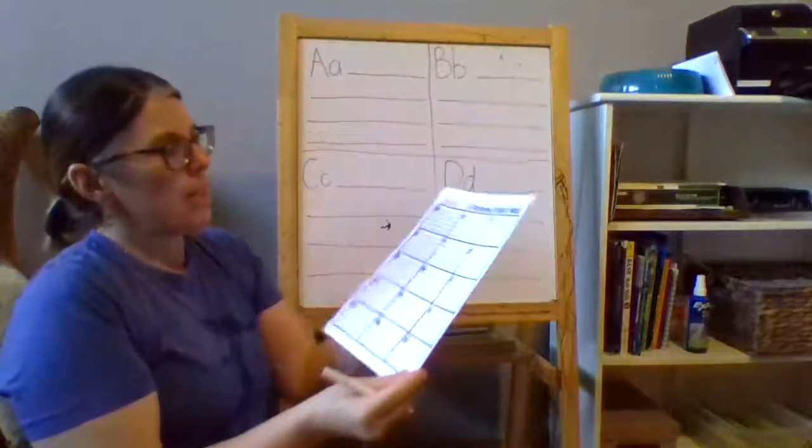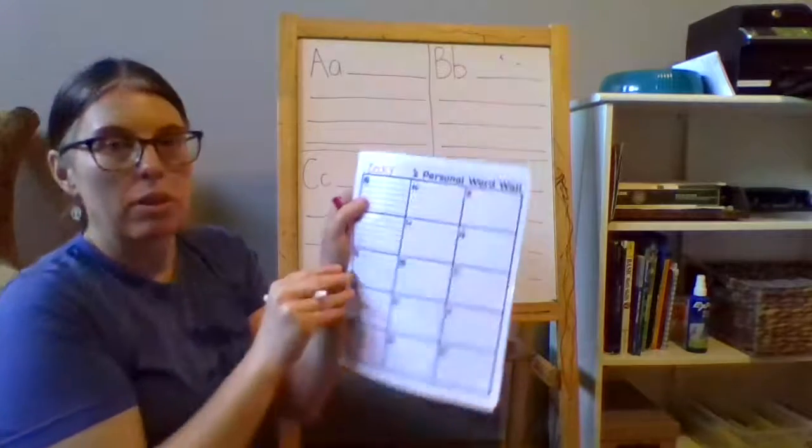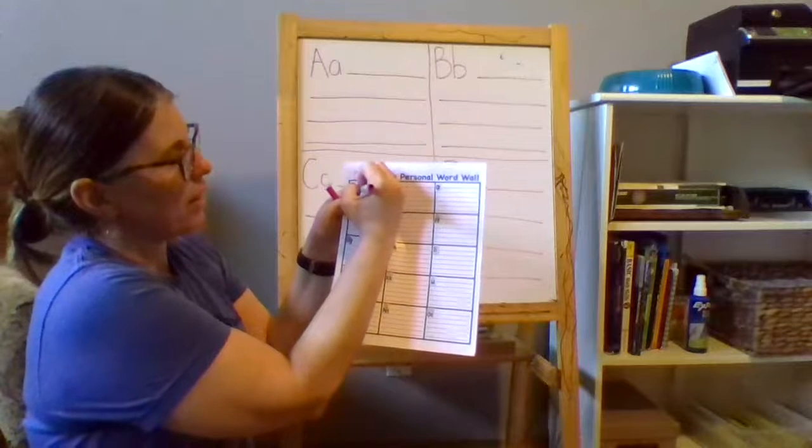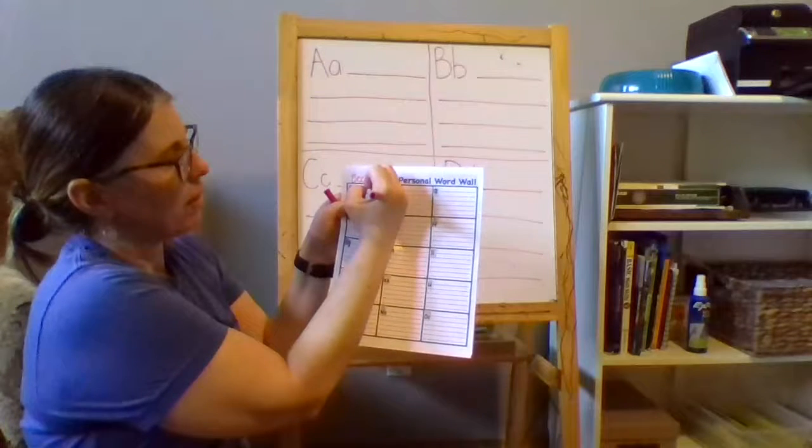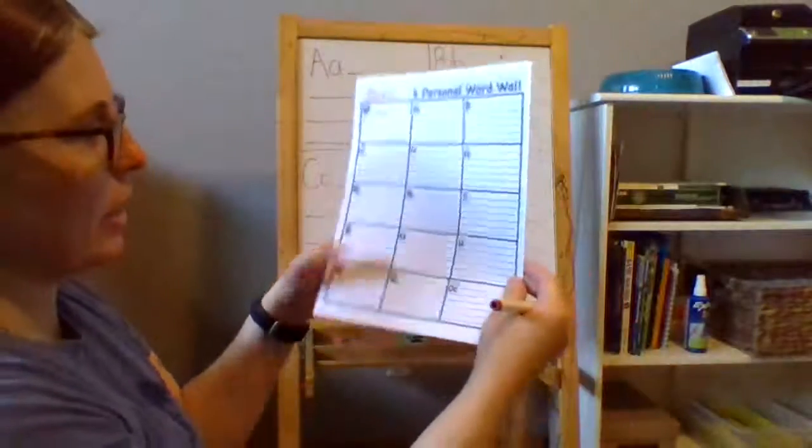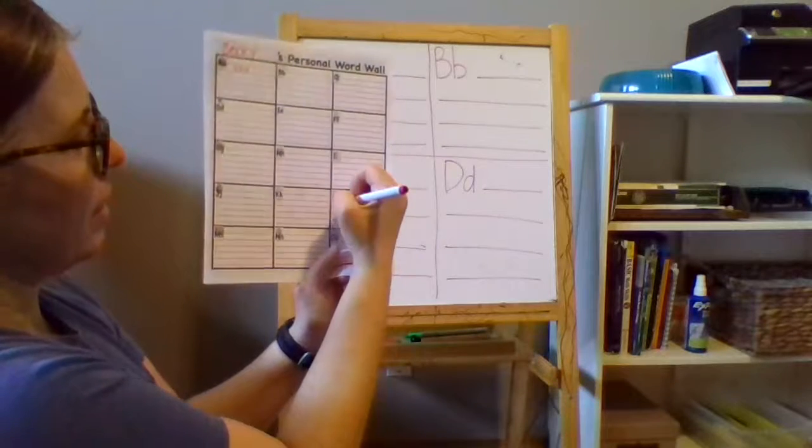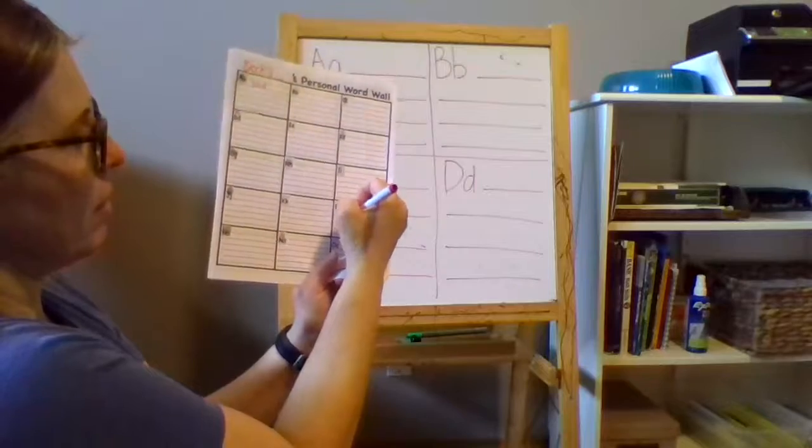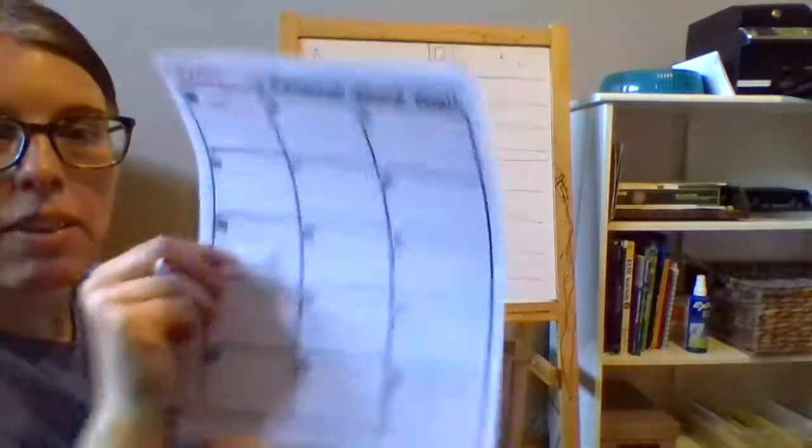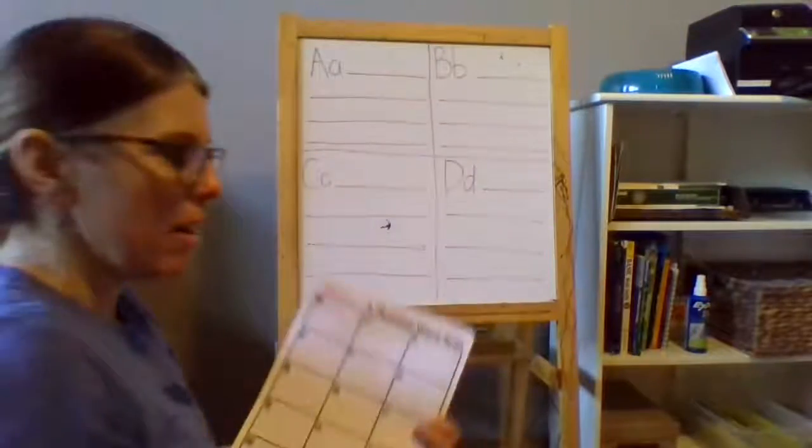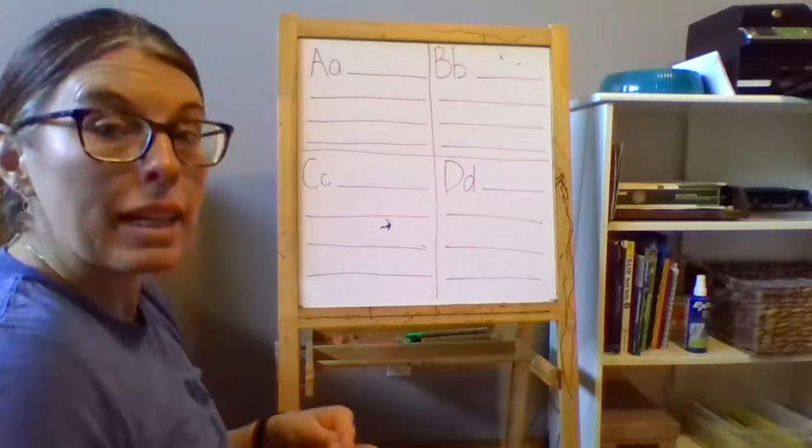Okay and then you're going to go through and any of the words that you've already practiced you're going to write on these lines. Like say you practiced the word and, you're going to put that here. Say you practiced the word like, you'll find L and you'll put like right in here. So any of the words that you have practiced so far I want you to add to your personal word wall. And then each week when you practice some new words I'd like you to add them to your word wall.